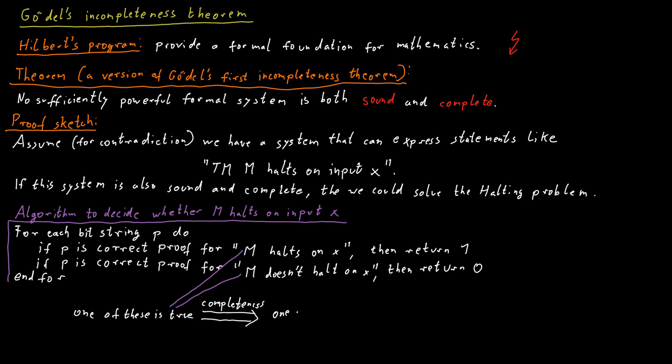So one of these two statements has a valid proof. And we enumerate all potential proofs, all bit strings. So eventually we will find one that proves one of those two statements and the program will terminate.